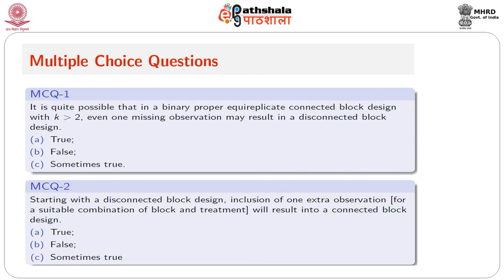The next question: starting with a disconnected block design, the inclusion of one extra observation for a suitable combination of block and treatment will result in a connected block design. Is this statement true, false, or sometimes true? You have two disconnected segments and you are including one extra observation — for a suitable combination of block and treatment, does that result in a connected block design?